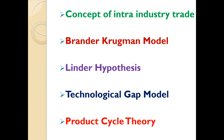Two theories based on intra-industry trade models: one, the Brander-Krugman model; the other, the Linder hypothesis. And two theories that relax the assumption of same technology, namely the technological gap model of Michael V. Posner and the product cycle theory of Raymond Vernon. We will start with the concept of intra-industry trade.